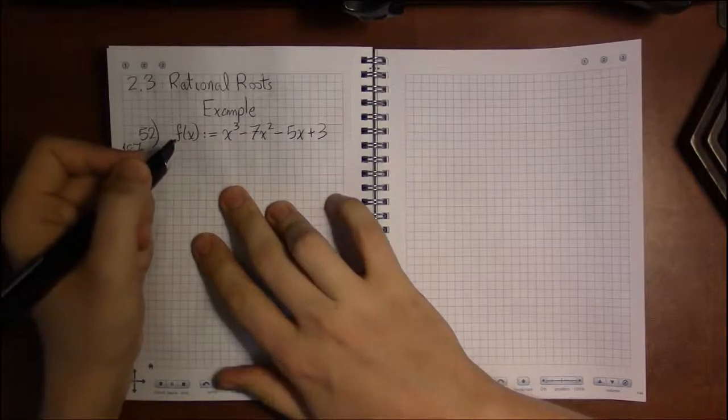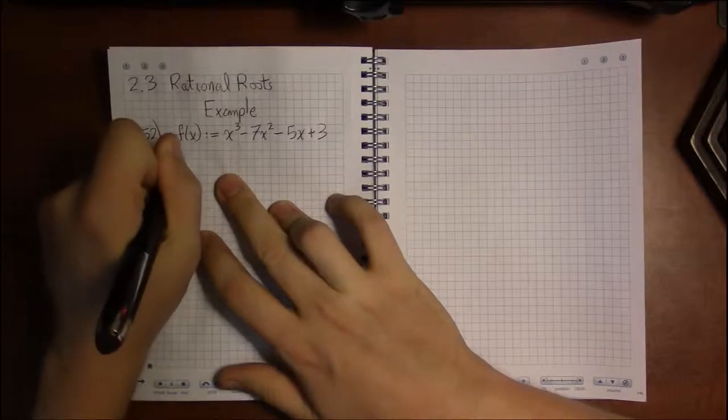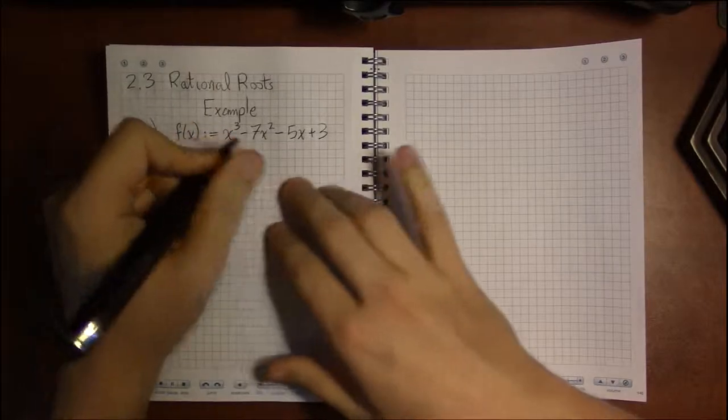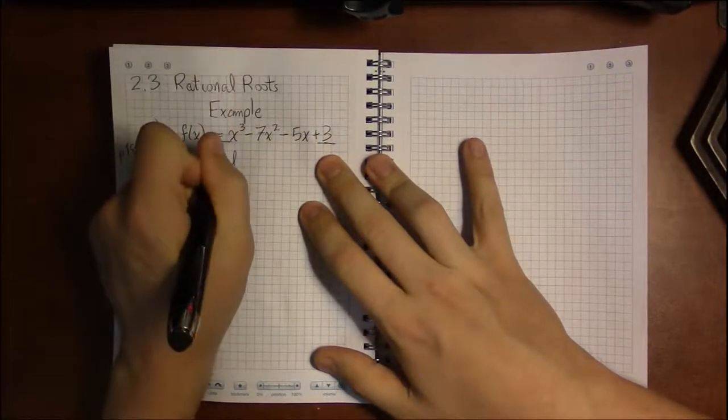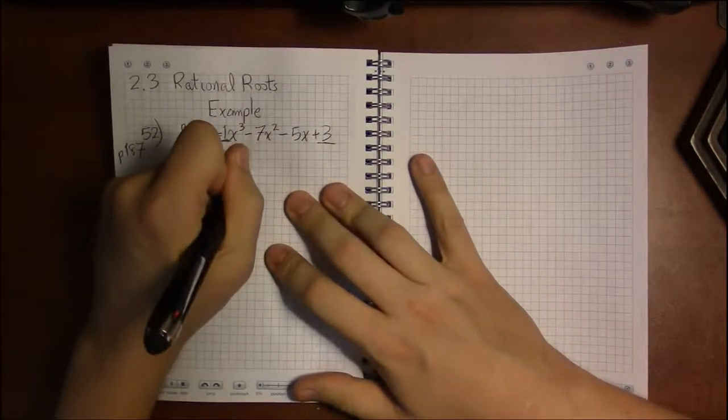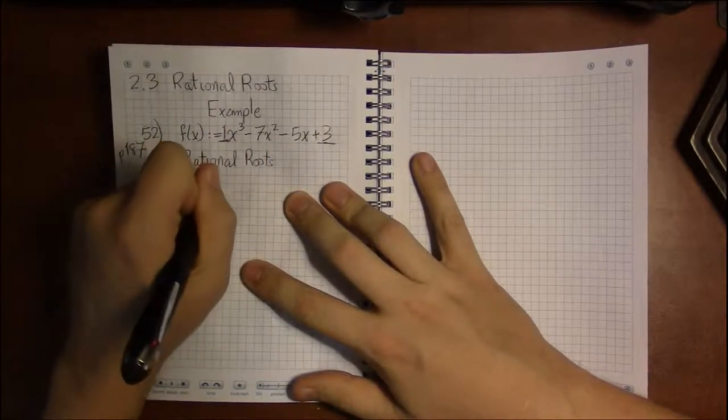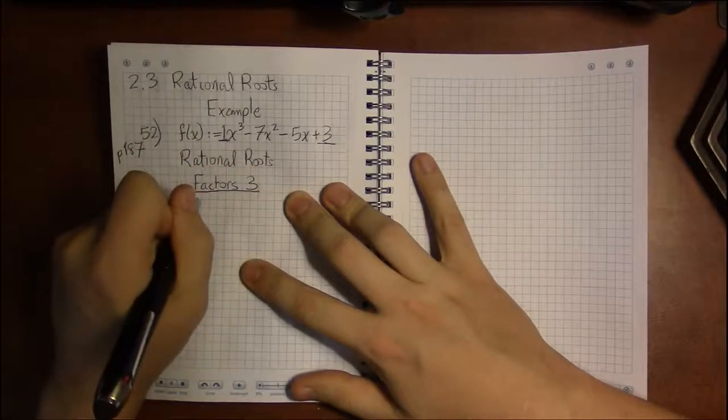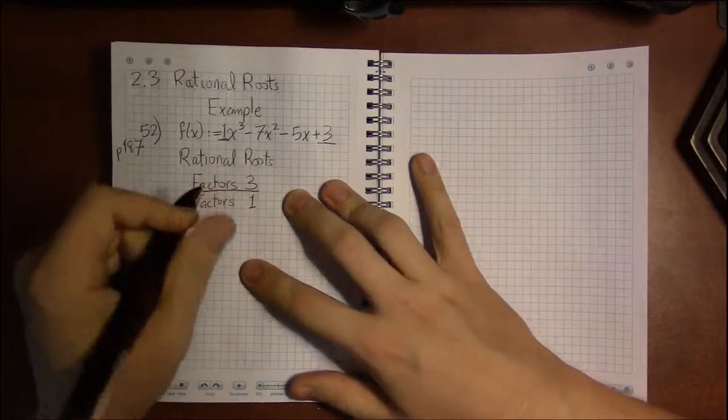The first thing we're going to do is find the rational zeros using the rational roots theorem. We need to look at the constant term and the leading coefficient, which in this case, since it's not there, it's just 1. So we look at the factors of 3, the factors of the last number divided by the factors of the first number, the factors of 1, the leading coefficient.